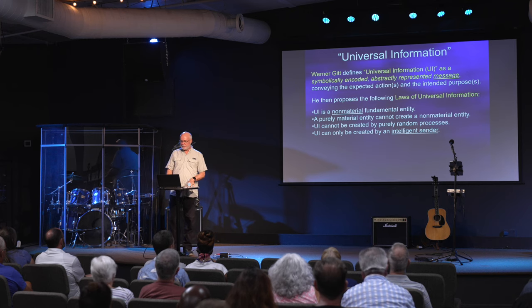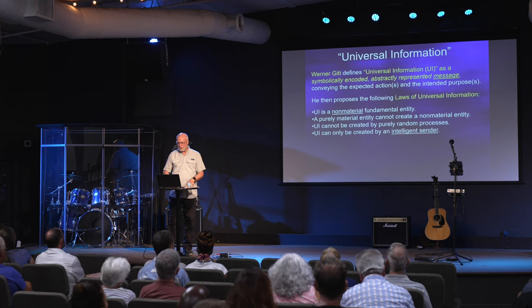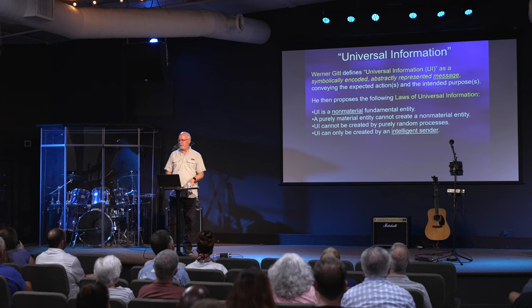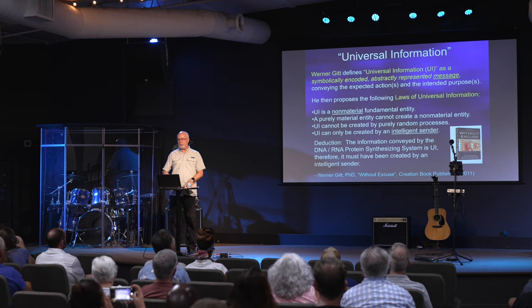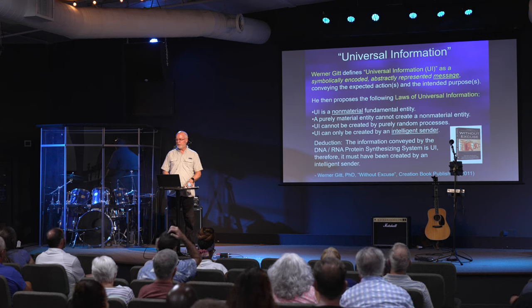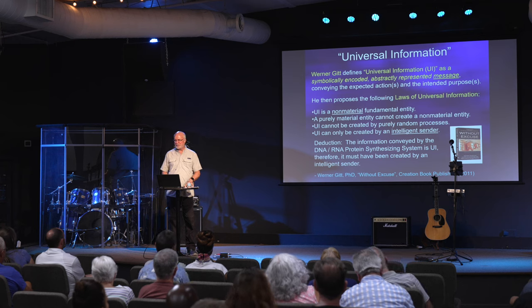He goes on to say universal information is non-material and a fundamental entity. Information is not material — it's communicated through material means. I'm speaking and there are sound waves materially leaving my mouth and striking your ear, but the information encoded is actually a mental thing. A purely material entity cannot create a non-material entity. Universal information cannot be created by purely random processes — and that's exactly what Darwinian evolution says. Universal information can only be created by an intelligent sender. Therefore, the information conveyed by the DNA, RNA, and protein-synthesizing system must have been created by an intelligent sender.